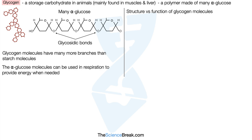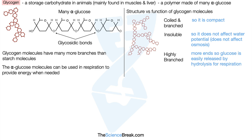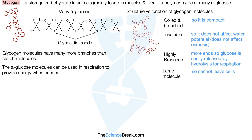Looking at the structure versus function of glycogen: it's coiled and branched, so it's compact — a lot can be stored in a small amount of space. It's insoluble, which means it does not affect water potential or osmosis, and does not cause the movement of water into or out of the cell. It's highly branched, meaning there are more ends so glucose is easily released by hydrolysis for respiration — there are many more ends than in the starch molecule. It's also a large molecule, so once stored inside cells it cannot leave, which is always good for storage.